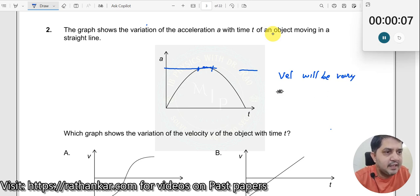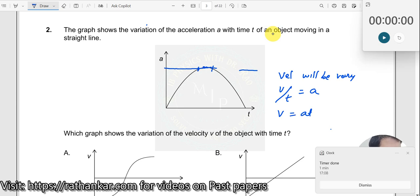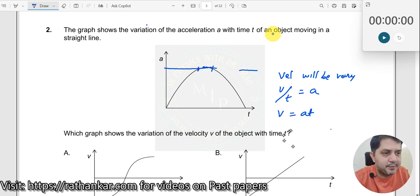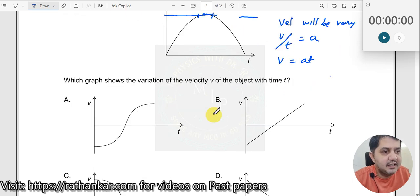So how will it vary? Velocity varies. V by t will be equal to a constant. In other words, it should be a straight line. V is equal to u plus at, or V should be equal to a into t. So this is what you should observe. That means V should be proportional to t. Now that is the graph that we need to look at.